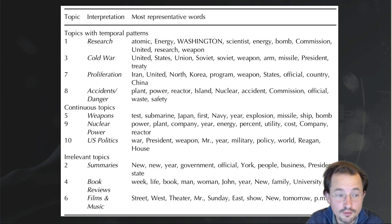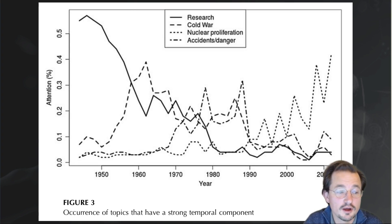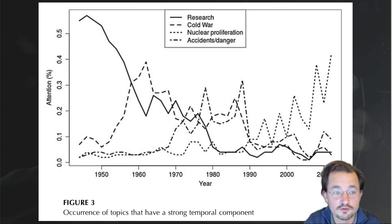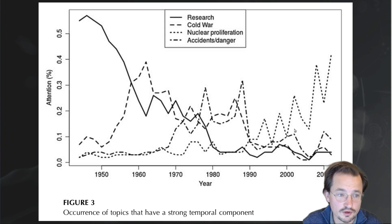Once we've estimated our topic model and validated it with face validity — more on that later — and assigned labels to each topic, we can start doing the substantive analysis. One thing we looked at is topics that changed over time. This is a graph from the 1940s to the 2010s showing a small number of interesting topics. The research topic starts really high — this might also be called the 'promise of nuclear energy' topic, close to the promise-of-energy frame that Gamson and Modigliani detected. It goes down pretty quickly as the disadvantages of nuclear power are discovered, and stays really low at the end, totally dominated by nuclear proliferation. The accidents and danger topic spikes for Three Mile Island, for Chernobyl, and later for Fukushima.